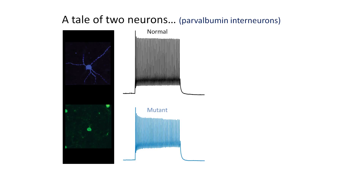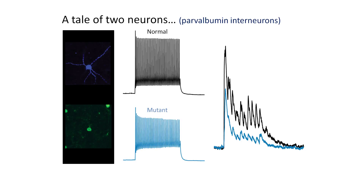We can actually measure how well these parvalbumin interneurons talk to other neurons by recording from cells that receive signals from them — shown in black for normal mice and blue for mutant mice. You can see that these signals are way weaker in the mutant mice; the parvalbumin interneurons are not able to communicate with other neurons nearly as well. That looks a lot like what we see in schizophrenia, where we know these parvalbumin interneurons are broken.